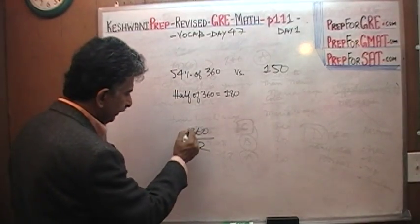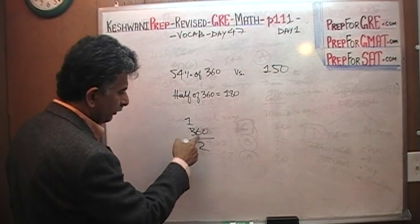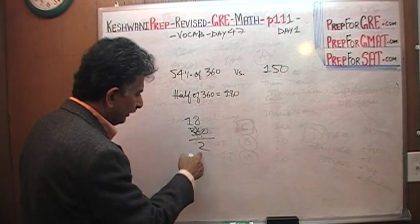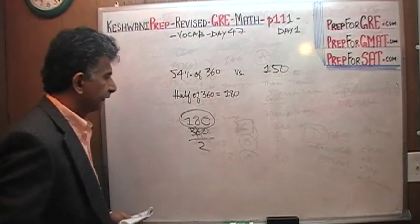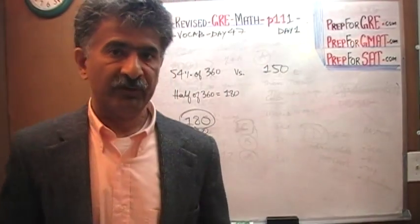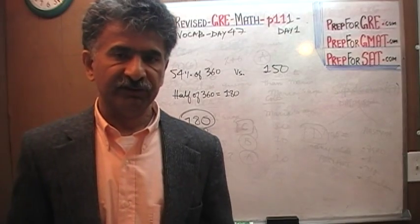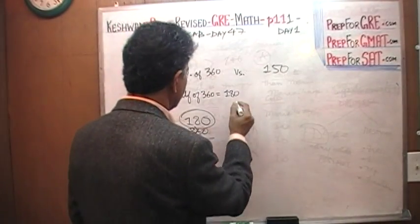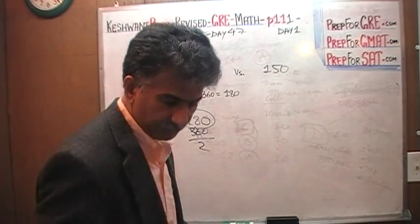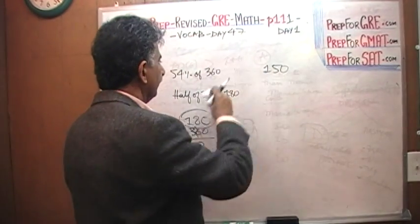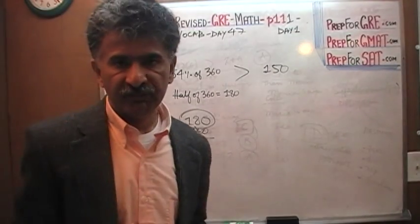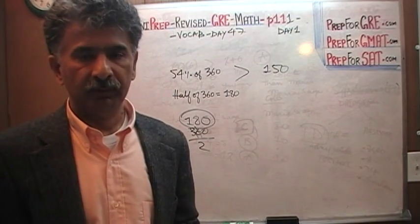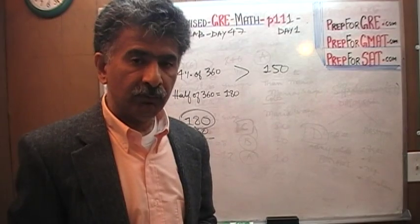So 180 is half of 360, which represents 50%. If 50% of 360 is 180, then 54%—whatever that may be—has to be more than 150. Therefore, 54% of 360 is going to be more than 150. The answer is A. These questions are called quantitative comparison.